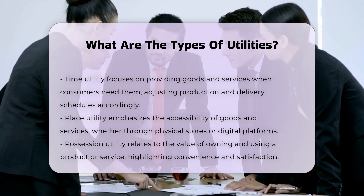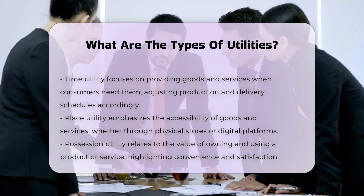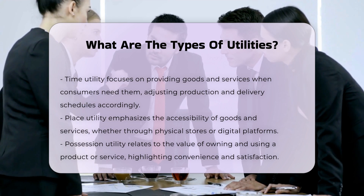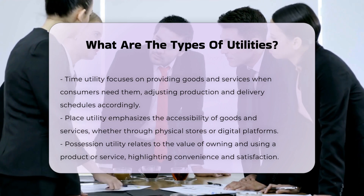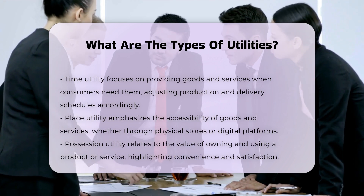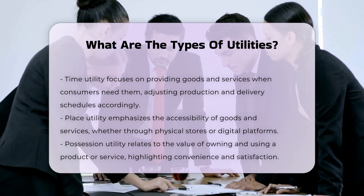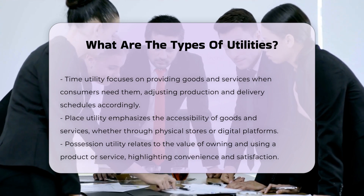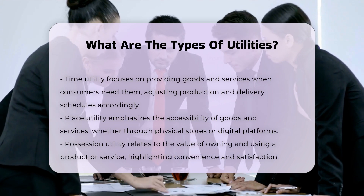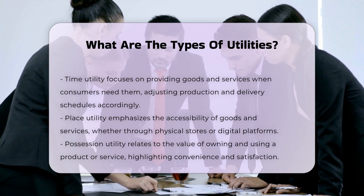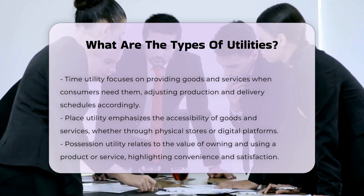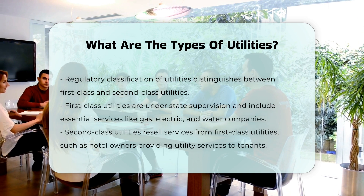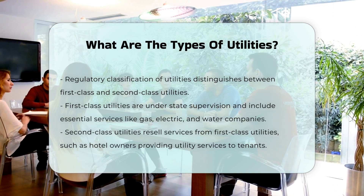Place utility involves making goods and services easily accessible to consumers, whether through physical locations like stores or digital platforms like websites. Possession utility is the value consumers get from owning and using a product or service — it's about the convenience and satisfaction of having immediate access to what you need.